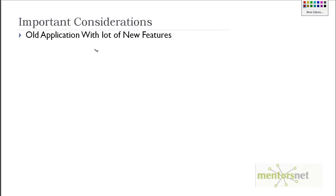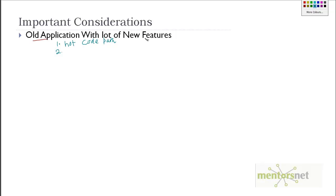So what are the important considerations? Let's say you have an old application and you enhance it with multiple new features. First, consider what is the new code path, or what we call the hot code path. Instead of testing only the old features, consider testing the new features where you have the new code, because that is probably where you are going to get most of the issues. Also, do some kind of regression analysis — if you have data about the old performance numbers, compare the performance data of the old with the new.